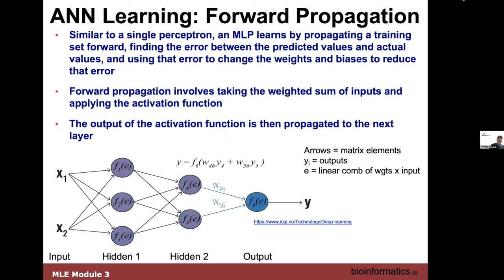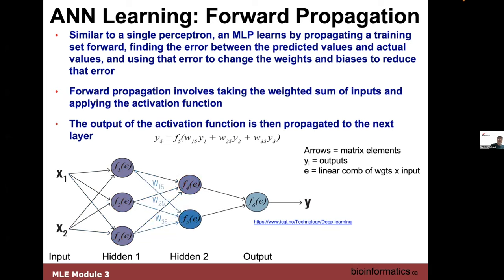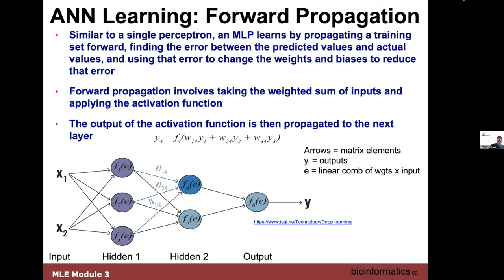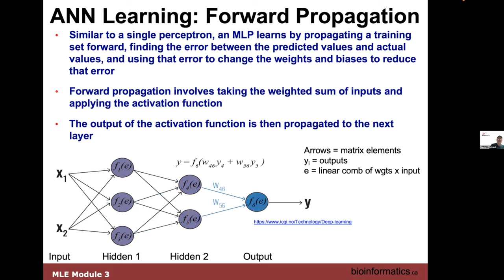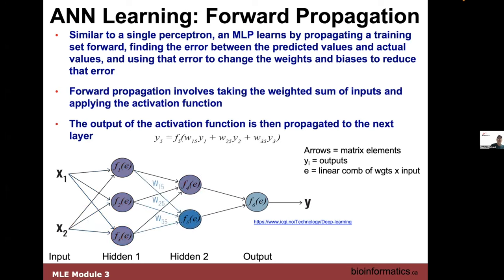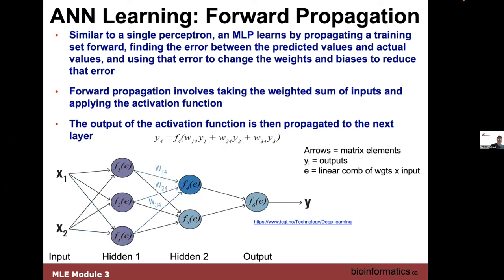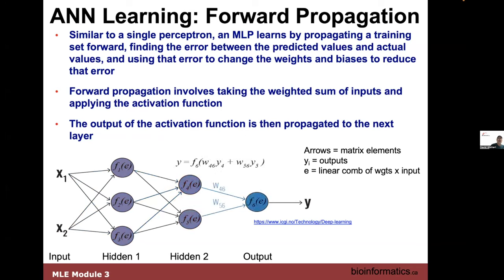In this animated GIF, you have inputs X, hidden layer one, hidden layer two, and then an output layer — a four-layer network. You're seeing functions of the weights: weight of X with subscripts X1, W14, W25 representing positions of different nodes. You can see F1 through F6 as node numbering, and connections between nodes — four and six, five and six, two and five — giving weights W45, W26, W46, W56.